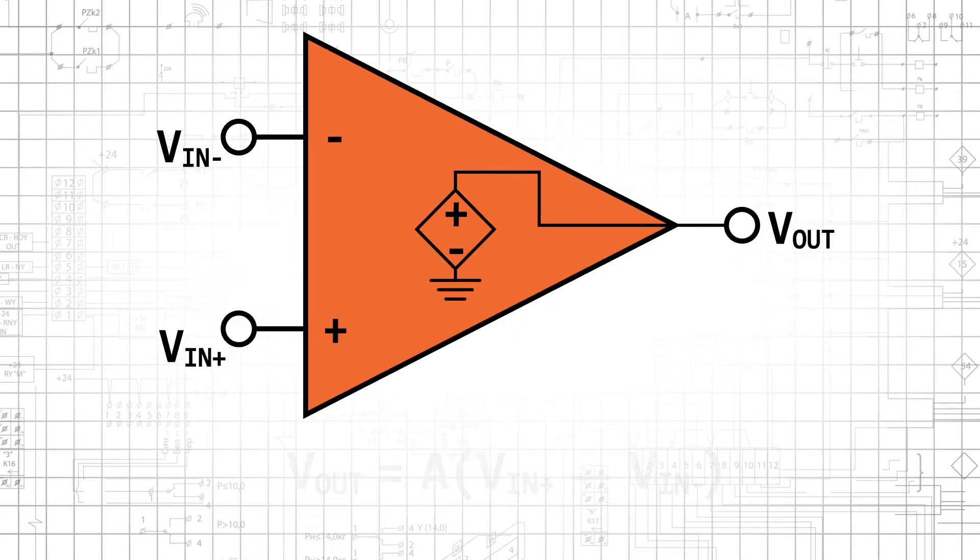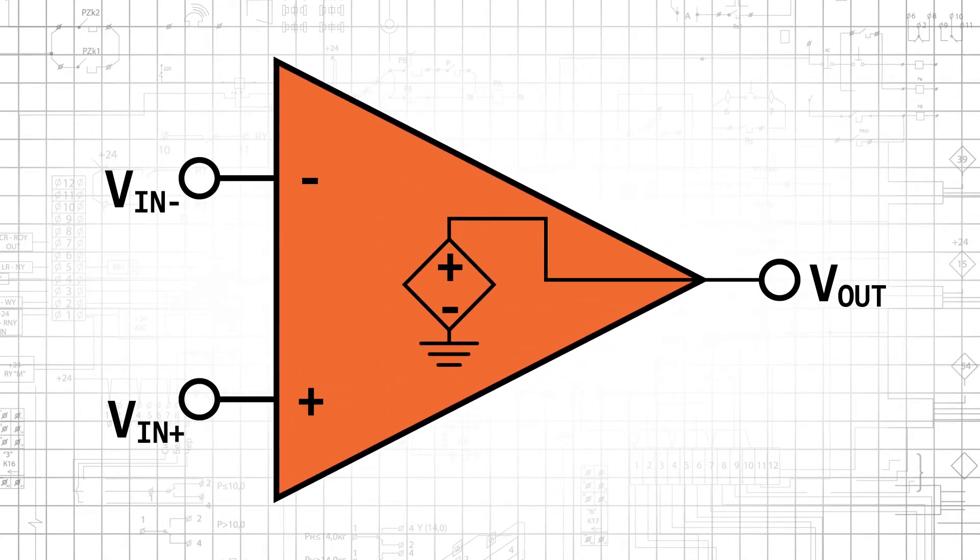Let's look at a few additional characteristics that are implied by the VCVS model shown here. An op-amp is a differential amplifier. It amplifies the difference between the two input voltages.